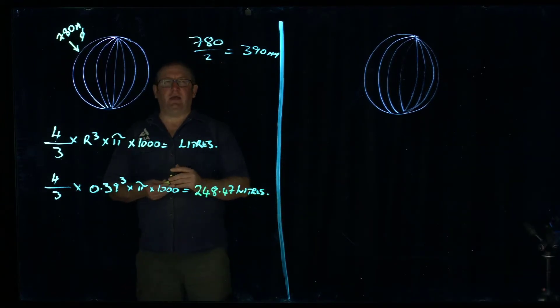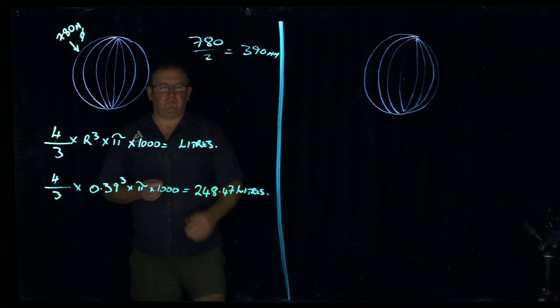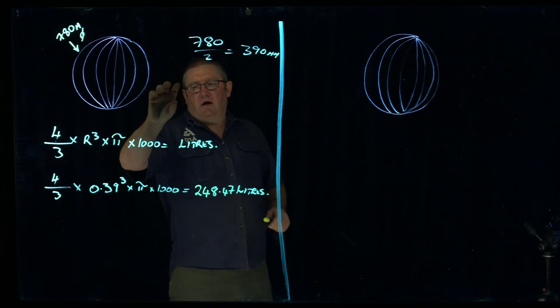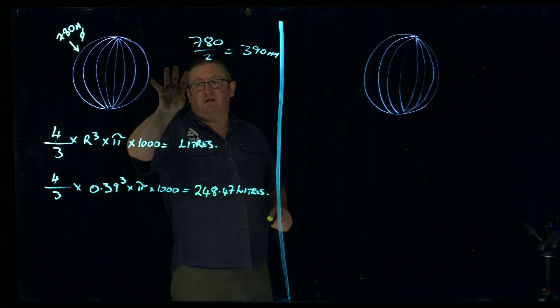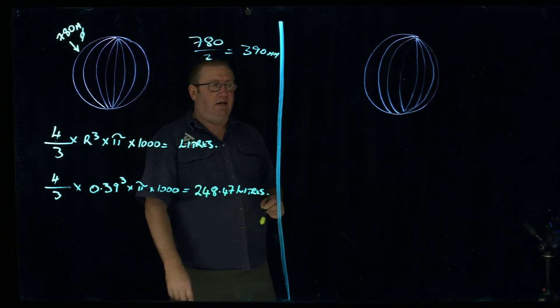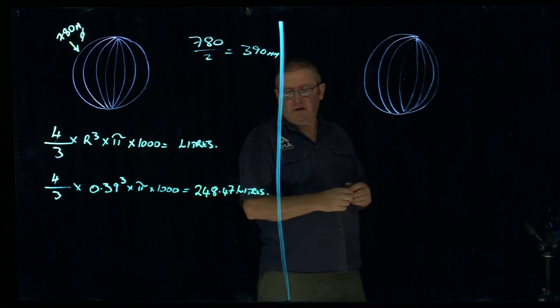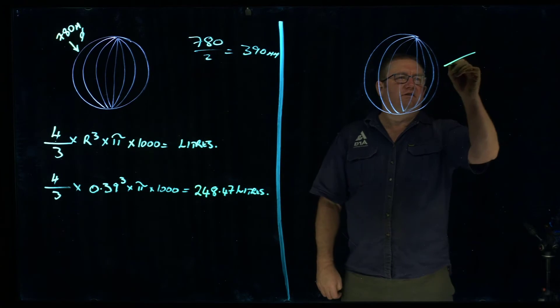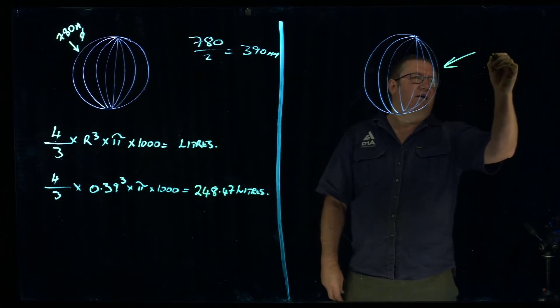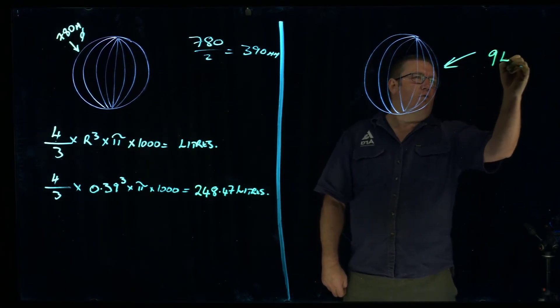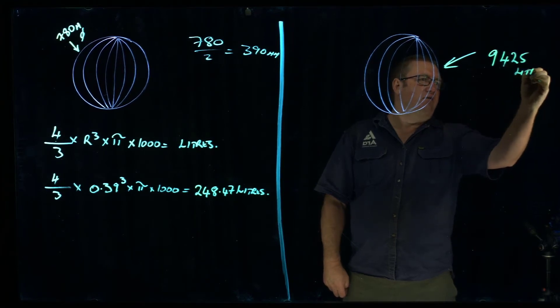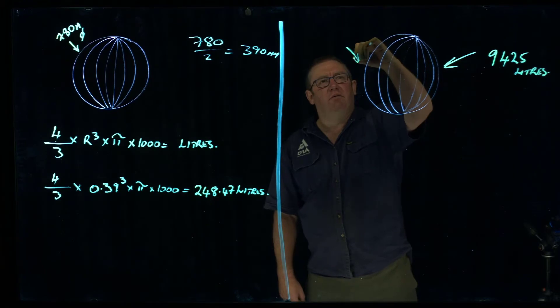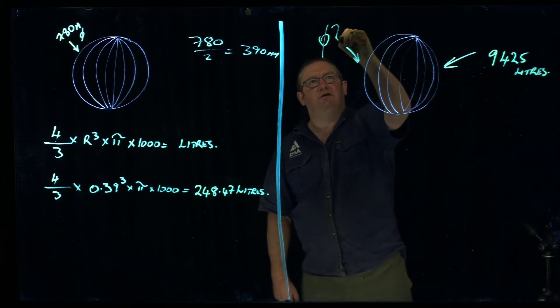So that is how we can determine the cubic metreage. And if we times it by the 1,000 into the equation, it automatically gives us our litres. So in this spherical tank here, I'm going to say it has a capacity of 9,425 litres. And we want to determine the diameter. So the diameter is missing.